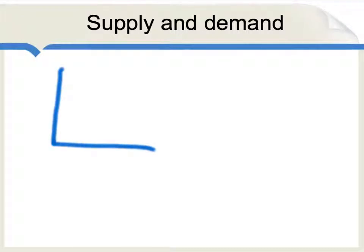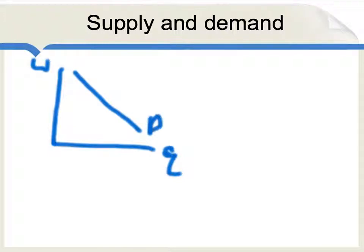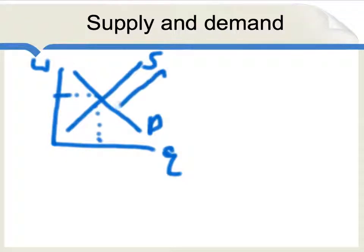Here we have the labor market — the vertical axis is wage, and here's the quantity of labor. We have a downward sloping demand curve for labor and an upward sloping supply curve. The common intuition is: you have more immigration, you have a new supply curve which has shifted out, and you have a new wage level which is lower than the old wage level. Therefore, it seems that by increasing the supply of labor, immigration lowers wages. But that's really not how it works.